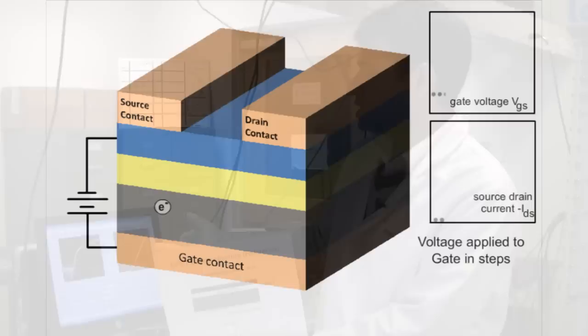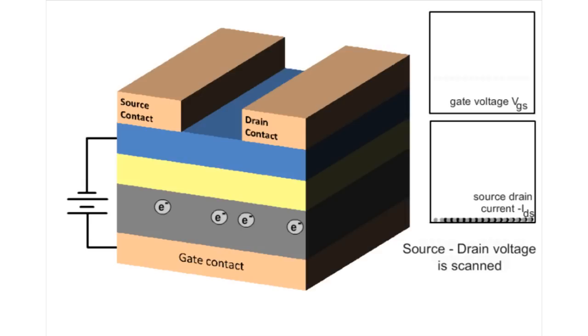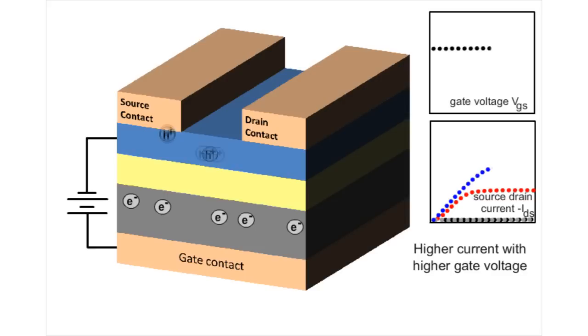The next one is where we fix the gate voltage and then scan the voltage difference between source and drain. And that is called output characteristics.